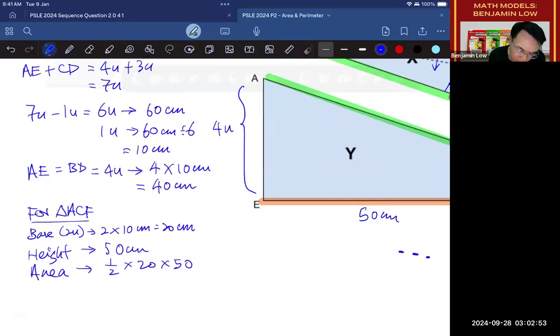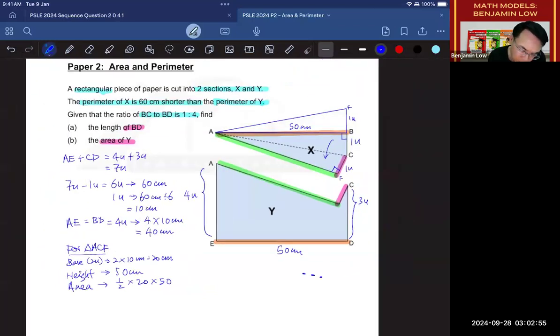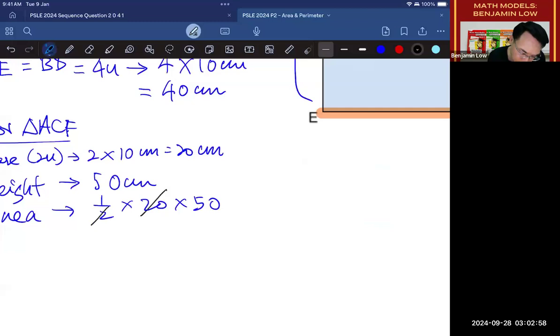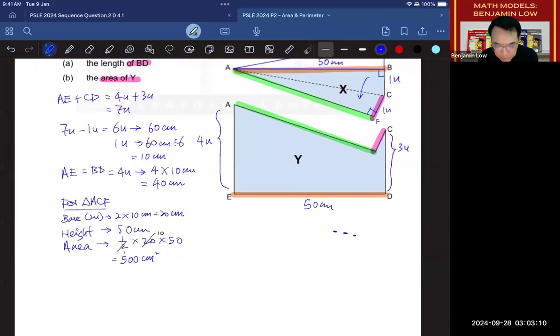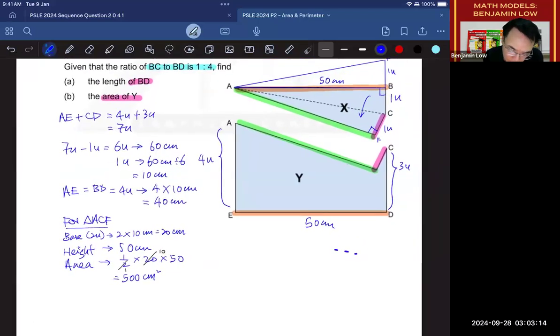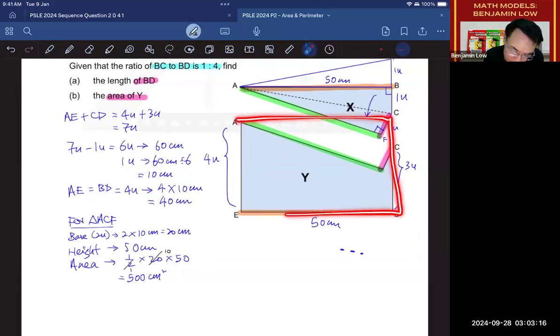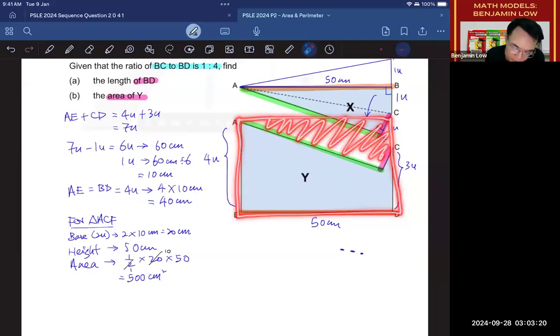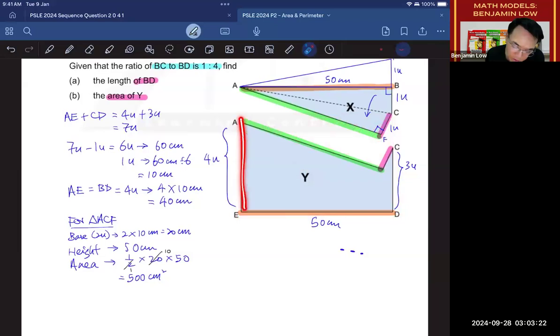Okay? So I'm going to write down that the height being 50, then the area of triangle ACF will be half times 20 times 50. Okay? So half times 20 times 50, we can simplify it like this. And that will give me 500 cm squared. Okay? 500 square centimeters. Remember, our goal is to take the area of the rectangle and subtract away the area of X to get the area of Y.